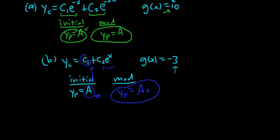So again: first you look at the right-hand side of the DE and nothing else — that gives you the initial. Then you look to see for repetition. If there's any repetition, you have to multiply by x to get rid of it.